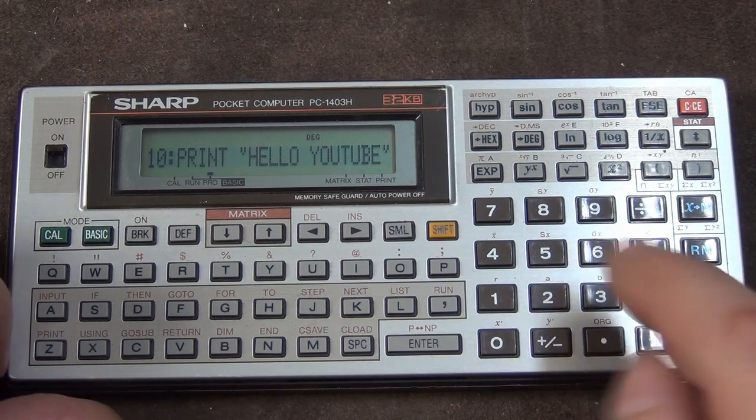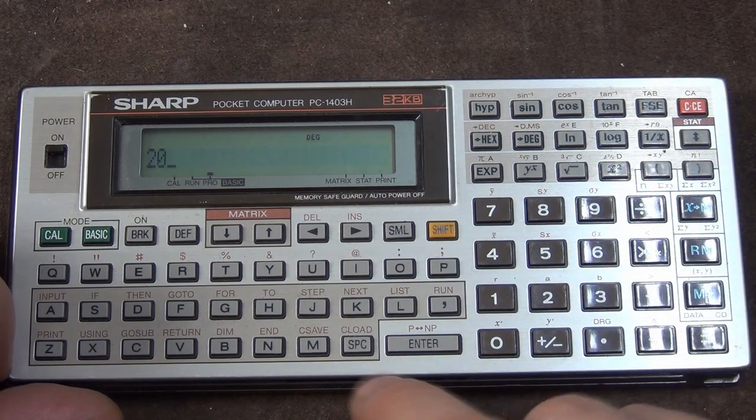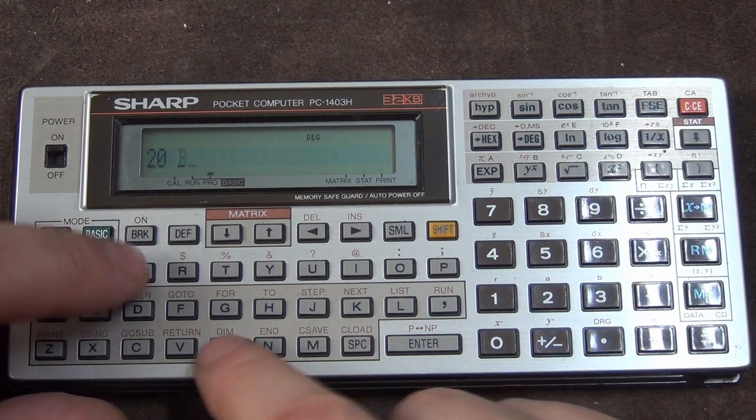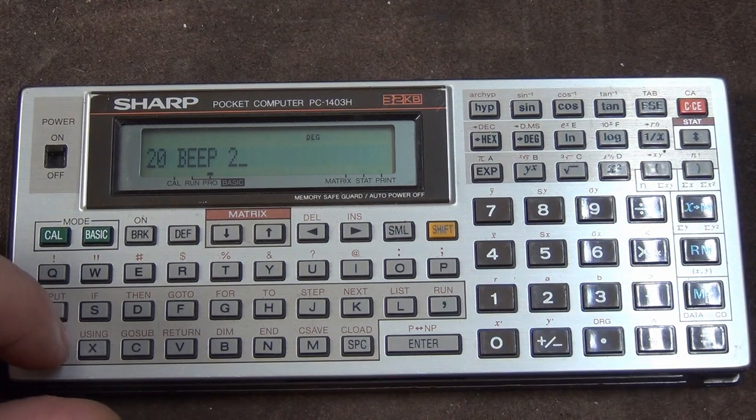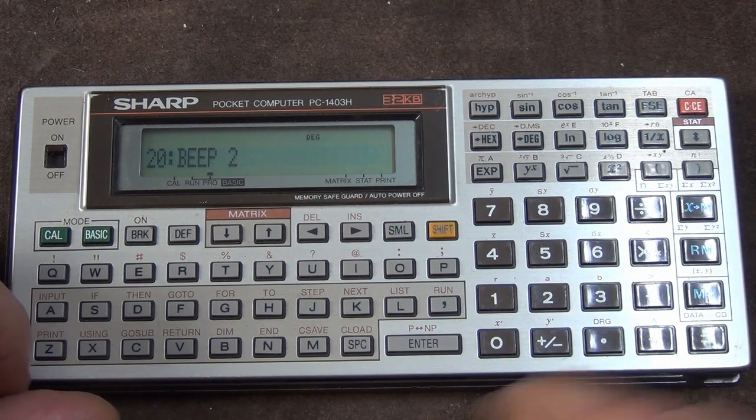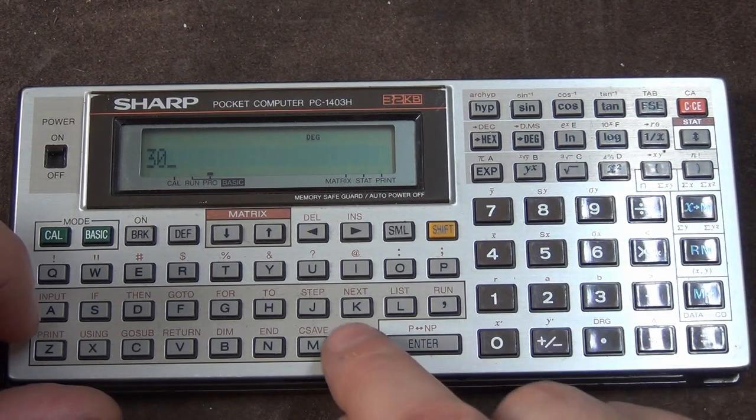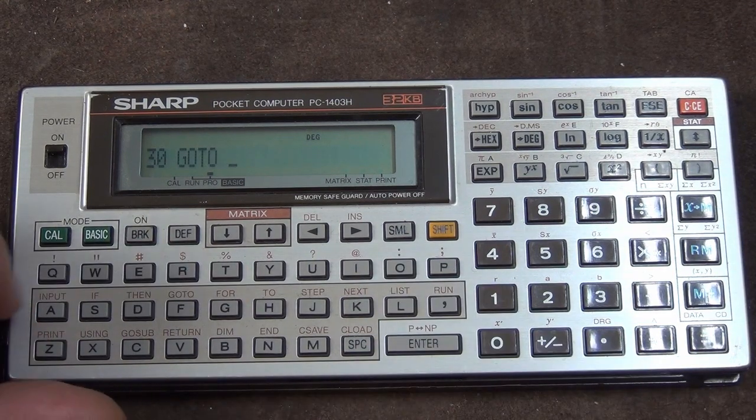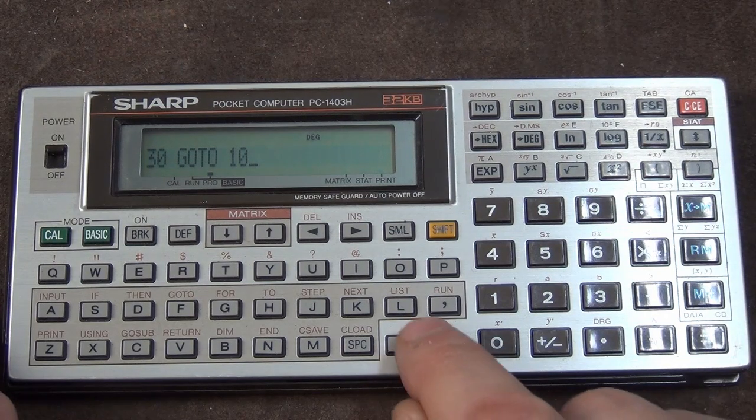This was our first line. Now we go 20. The next line. What should he do then? He should beep two times. Ok. And the next line. You should start over again. I just say, go to 10. We start the program over. Enter.